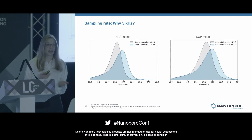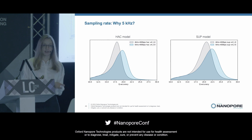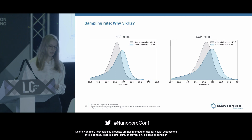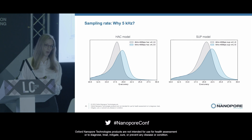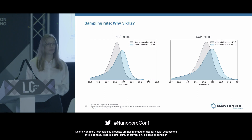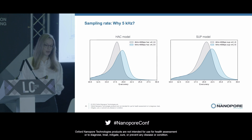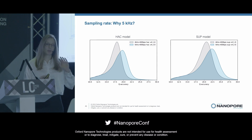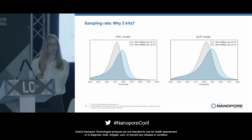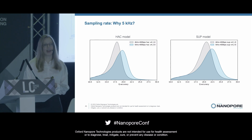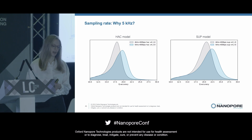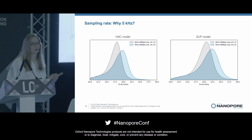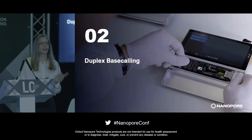Let's look at some accuracy comparisons between 4 kilohertz and 5 kilohertz conditions. These are read accuracy histograms — native human data aligned to the reference, showing accuracy in Q space. The gray histograms show the 4 kilohertz condition with the V4.1 models, and in blue, the new 5 kilohertz condition with the updated V4.2 models. We can see that both for the high-accuracy HAC condition and the super-accuracy submodels, there's a substantial improvement in accuracy. In particular, the HAC model at 5 kilohertz is now at Q20.